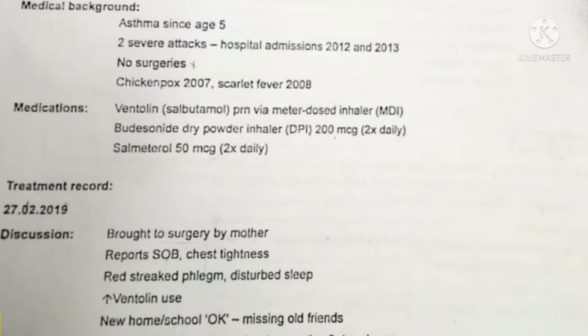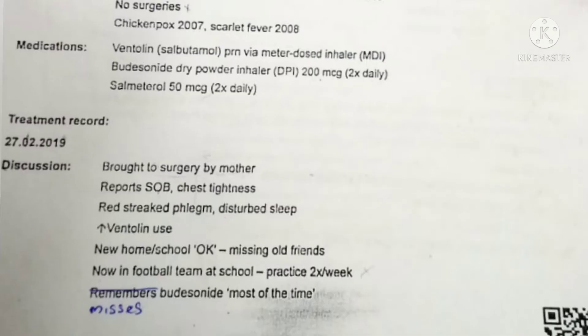Treatment record: on 27 February 2019 he was brought to surgery by his mother. He reports shortness of breath, chest tightness, red streak phlegm, disturbed sleep, and increasing Ventolin use. New home and school, missing old friends. We have to include the symptoms — how he came and that Ventolin use has increased. That is an important thing. He is now in a football team at school, practicing twice a week. He misses his doses of Budesonide most of the time — that is important to inform.